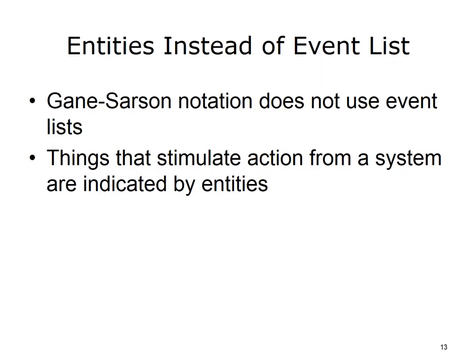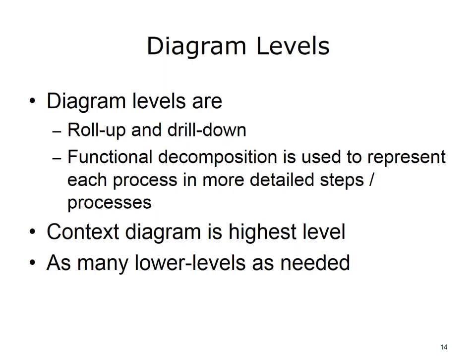Unlike Yourdon notation, Gane-Sarson does not use an event list to indicate things that stimulate action from the system — those are indicated by entities. Gane-Sarson, like Yourdon notation, uses level diagrams — a roll-up and drill-down approach where increasing levels of detail are shown on successive diagrams. A process called functional decomposition is used to represent each process in more detailed steps. Each process in a DFD can be exploded, i.e., redrawn to show increasing levels of detail, using decimal numbers to maintain links to the parent diagram. The context diagram is the highest level, with as many lower levels as needed.